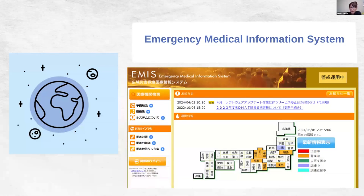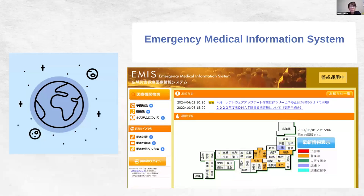EMIS is an information aggregation system for damage status and surge capacity of medical institutions in the event of a disaster. It is owned by the Ministry of Health, Labor and Welfare, and DMAT personnel, government officials, and public health center staff can access the data. However, the system could not access shelters. So as a visiting researcher at the National Institute of Public Health, I and my colleague from engineering created an online assessment tool that is easy to input even for those who are not tech-savvy.